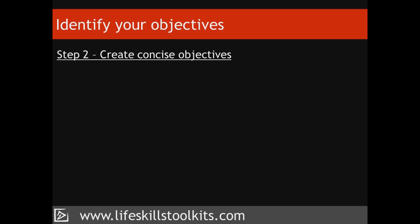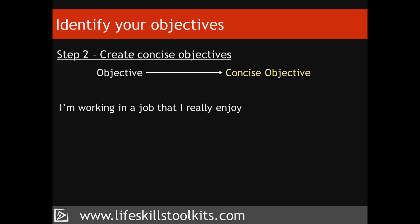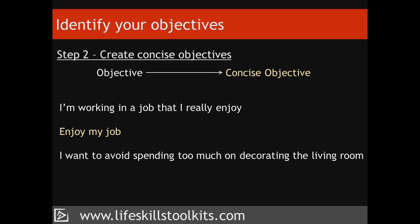Step 2: Create concise objectives. In this step, you take each item on your list and convert it into a concise objective using short phrases. For example, the answer to 'What's the best thing I want to happen?' — 'I'm working in a job that I really enjoy' — becomes 'Enjoy my job.' Here's another involving the question 'What do I want to avoid happening?' — 'I want to avoid spending too much on decorating the living room' — becomes 'Keep living room decoration costs low.'